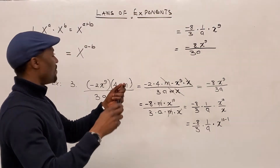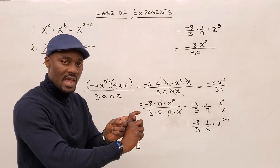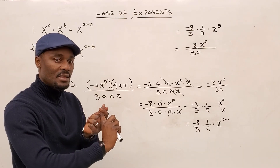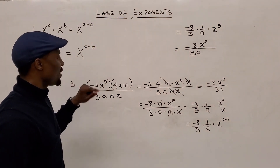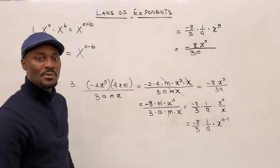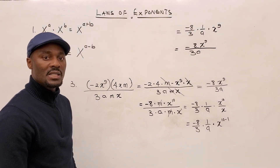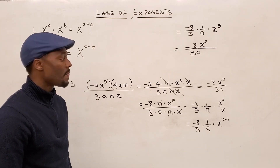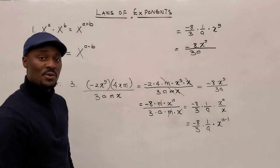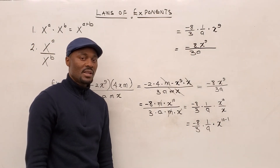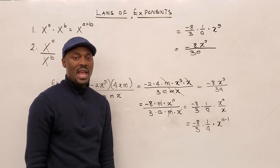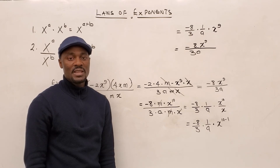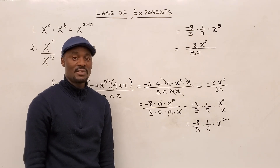Now you understand the first law — for multiplication it's the product law, you add the powers — and the second is the quotient law, meaning you subtract the powers. The other laws — what happens when something is raised to the power of zero, and negative exponents — we'll get to very soon. I hope you've learned something in this video. Thank you for watching. Please like, share, and subscribe, and hit the notification bell. My name is Newton Bukewoye. I'll see you in the next video. Bye-bye.